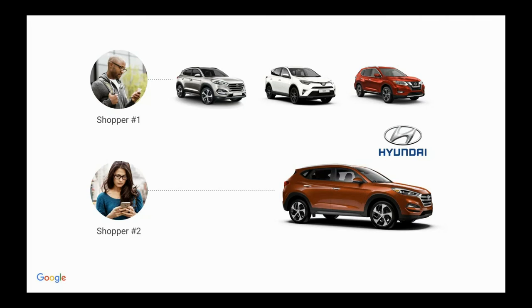Here's an example with two shoppers: one is interested in comparing a Hyundai versus other SUVs — specs, horsepower, features. The other wants to know where the closest dealership is to test drive it. What Hyundai did was give shopper one a comparison landing page between different SUV models, and shopper two a page showing the nearest place to buy or test drive. Two different landing pages — because different people have different intent.